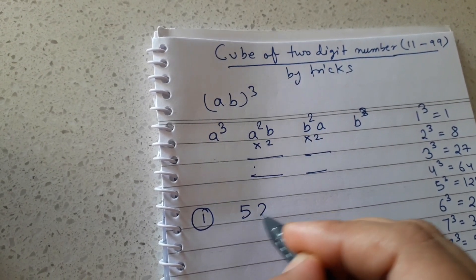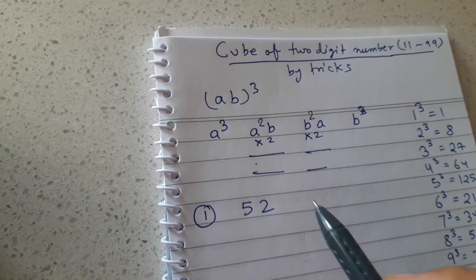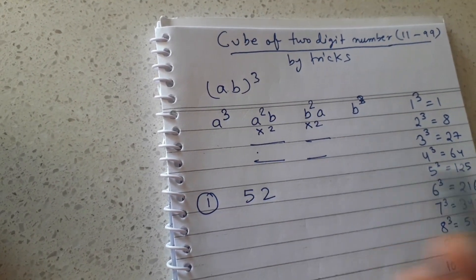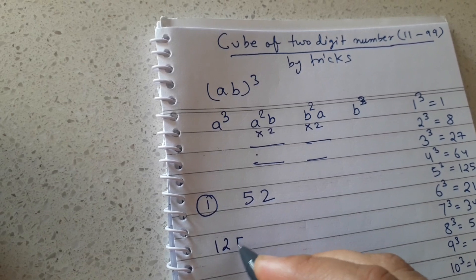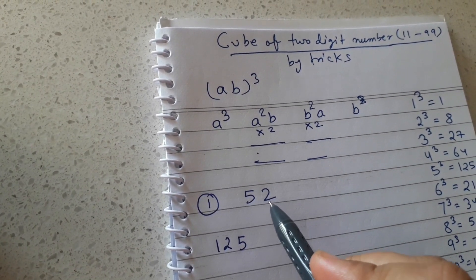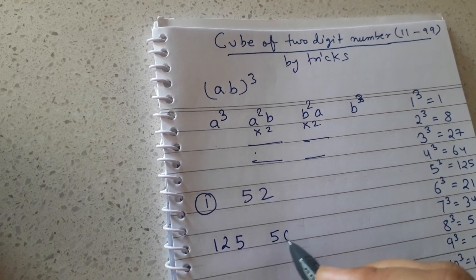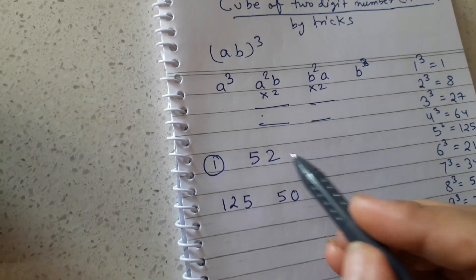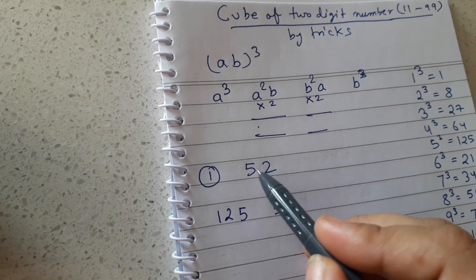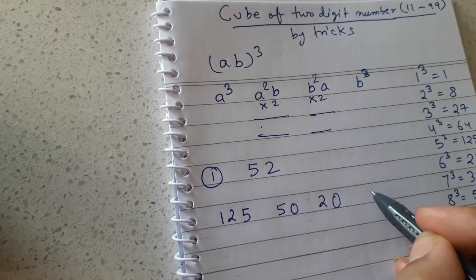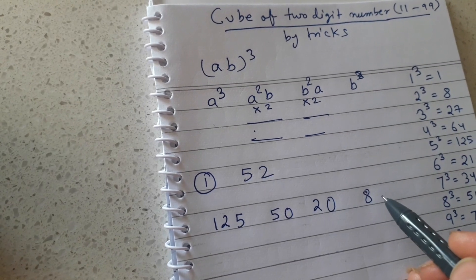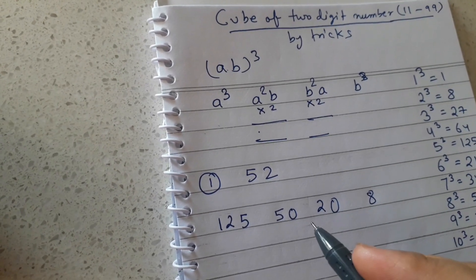Let's take the example of 52. First, 5³ is 125. Then a²b: 5² × 2 = 25 × 2 = 50. Then ab²: 2² × 5 = 4 × 5 = 20. And b³: 2³ = 8. So first step gives us: 125, 50, 20, 8.